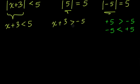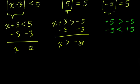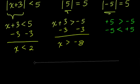So in both cases, we solve for x. On one side, we subtract 3 from both sides: negative 5 minus 3 gives x is greater than negative 8. On the other side, subtracting 3 from both sides, the 3's cancel and we get 5 minus 3, which is 2, so x is less than 2. So x is greater than negative 8 and x is less than 2. It seems like a random process, but let's make a graph and we'll have a better understanding.